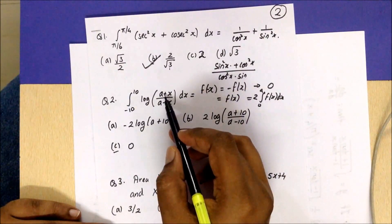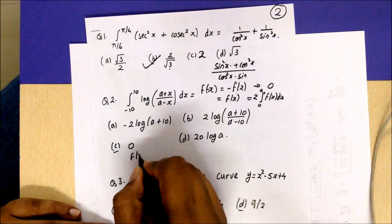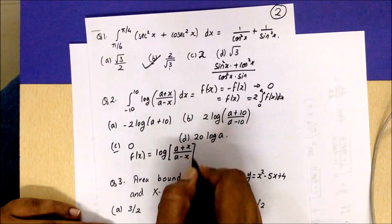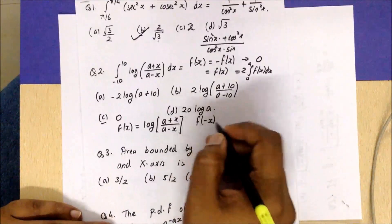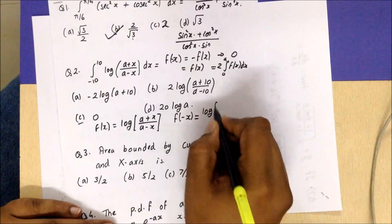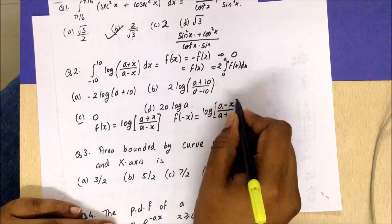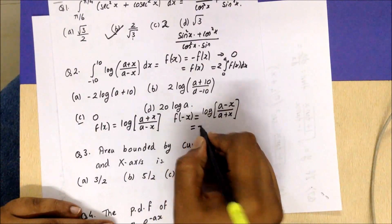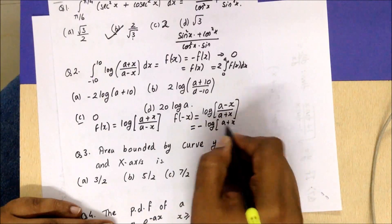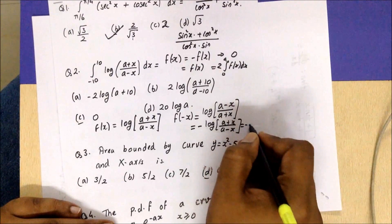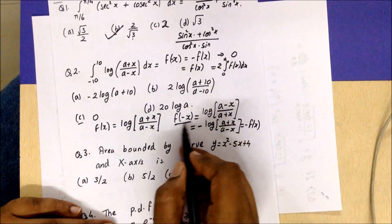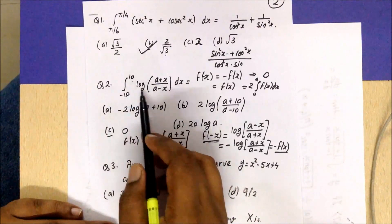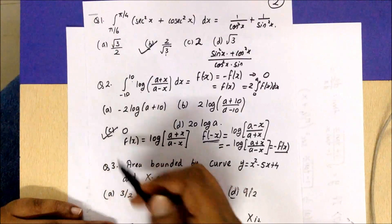What you have to do is substitute x as −x. Our function f(x) = log((a+x)/(a−x)). Replacing x by −x gives log((a−x)/(a+x)). Since the argument has been inverted and it is inside the log, this is −log((a+x)/(a−x)), which is −f(x). Since f(−x) = −f(x), this is an odd function and the integration from −a to a equals 0.